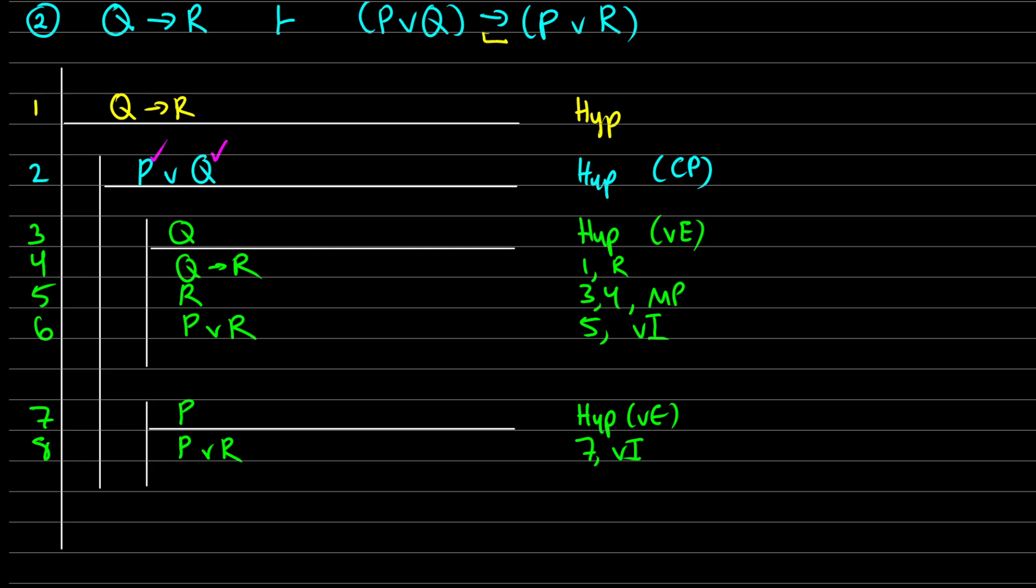Well now, whether we have P being true or whether we have Q being true, we know that the end result is going to be P or R. So if I extend this initial line a little bit longer, I can write down P or R in line nine. And this is because of or elimination.